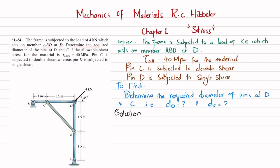Determine the required diameter of pins at D and C if the allowable shear stress for the material is 40 MPa. Pin C is subjected to double shear whereas pin D is subjected to single shear.